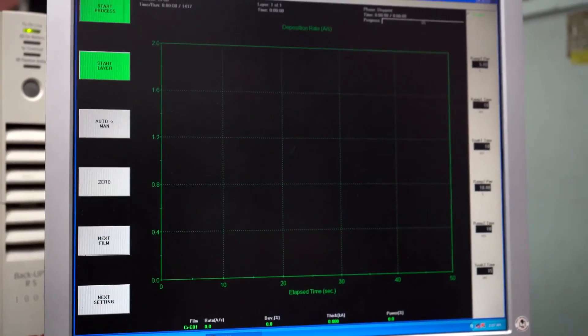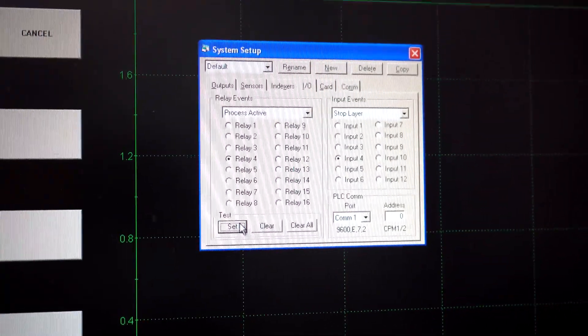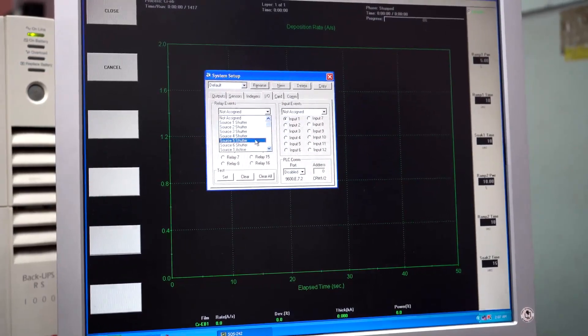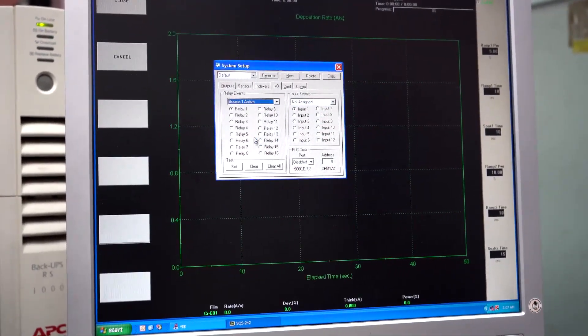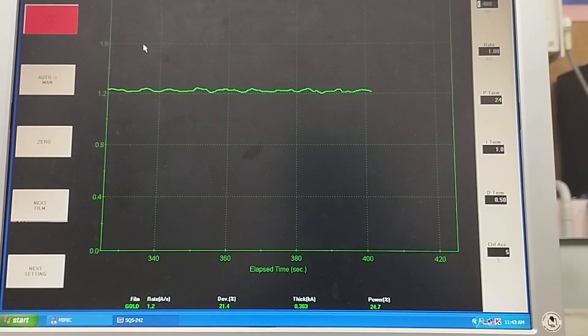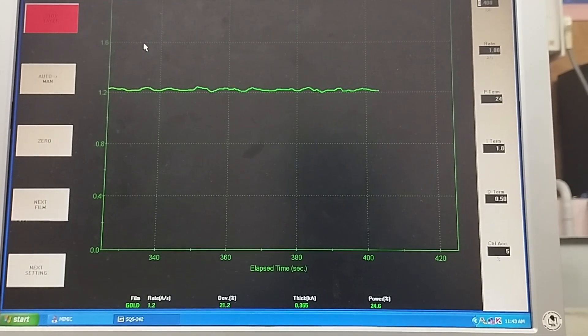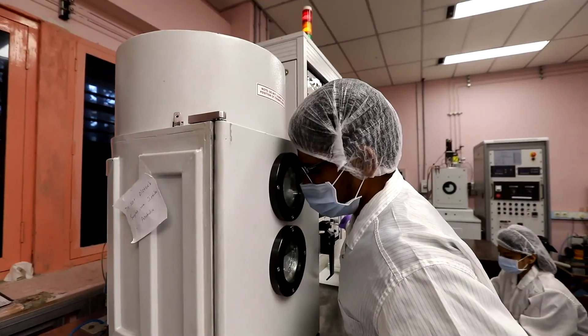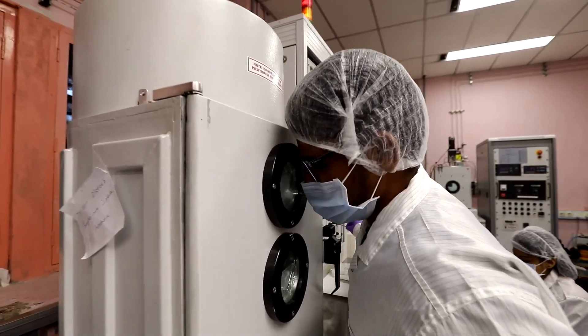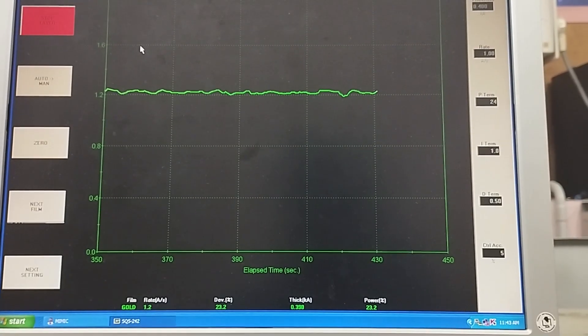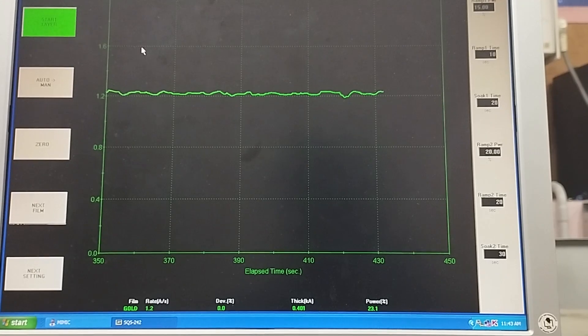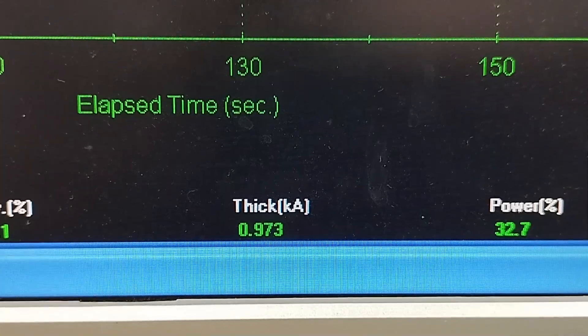Now set the metal and the deposition parameters in the process screen. Then click start process in the software. Deposition will start. From the chamber viewport, we can see the process inside the chamber. When the deposition will be completed, it will automatically stop the deposition.